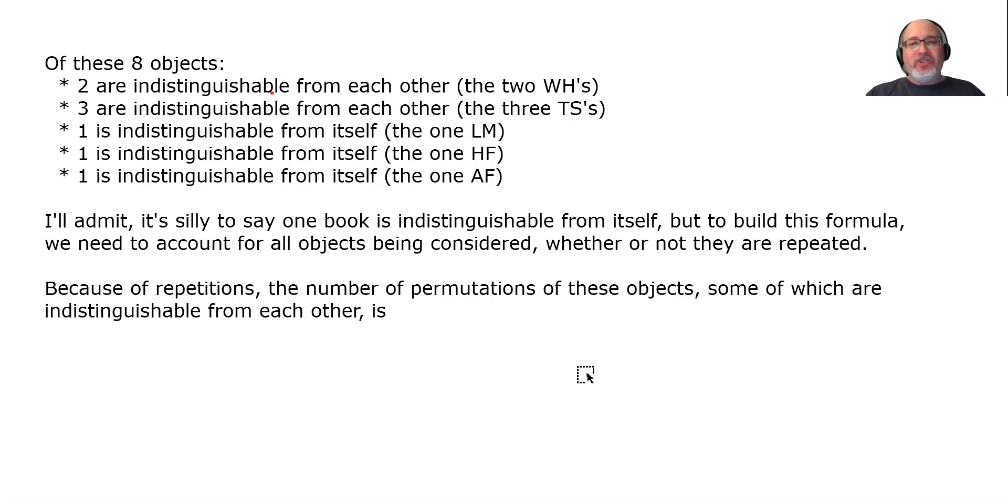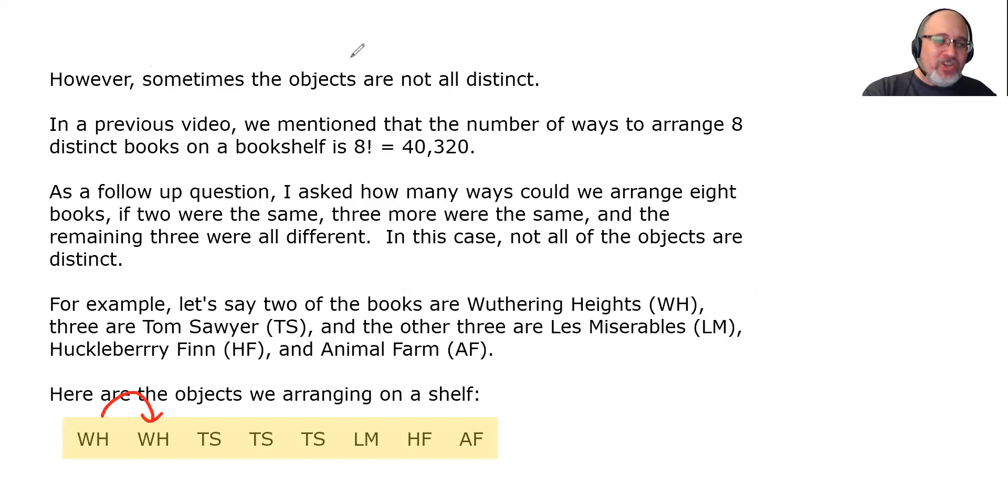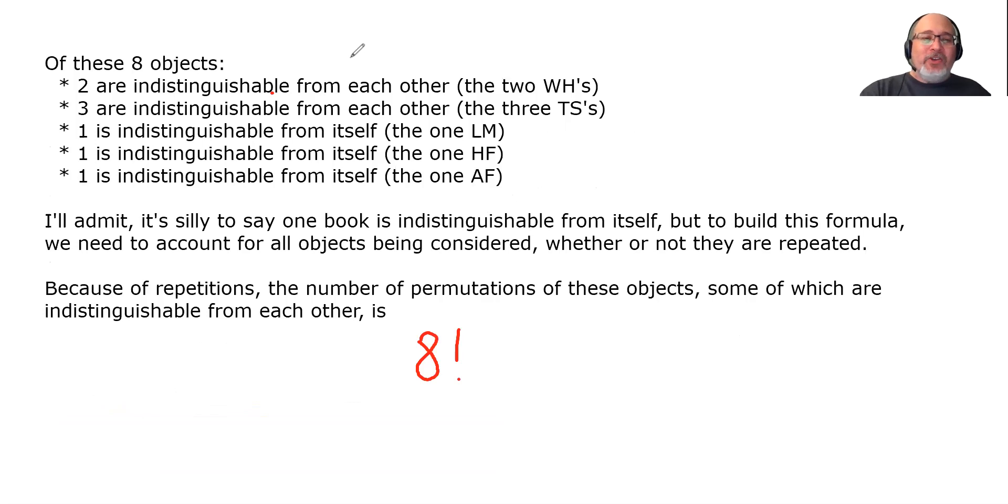Because of repetitions, the number of permutations of these objects, some of which are indistinguishable from each other, is not just 8 factorial. But it's really easy to adapt the formula to accommodate for objects that are repeated in our collection. It does start with 8 factorial. But that number would be too high. To account for repeated objects, you take the factorial and you divide it by some more factorials. The factorials that you divide it by are the factorials for the counts for each type of object. For example, there were two Wuthering Heights, so we divide this by 2 factorial. There were three Tom Sawyers, so we divide this by 3 factorial. There was one Les Mis, so we divide this by 1 factorial. There was one Huckleberry Finn, so we divide this by 1 factorial. And there was one Animal Farm, so we divide that by 1 factorial.